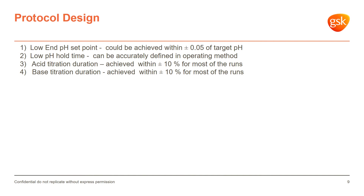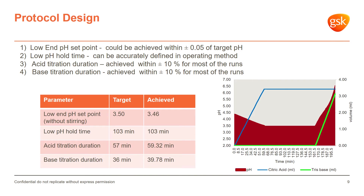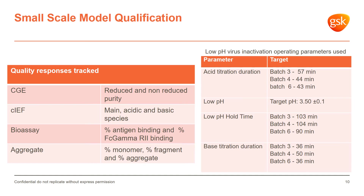The parameters we were looking at: the low pH endpoint, which we were able to achieve within ±0.05 units; the low pH hold time, which is dialed in by timers with no variability; and acid and base titration durations, which were the most tricky because we were adjusting the dosing rates of acid and base to achieve those durations. It was important to confirm that we were able to get those targets within ±10% of the range.